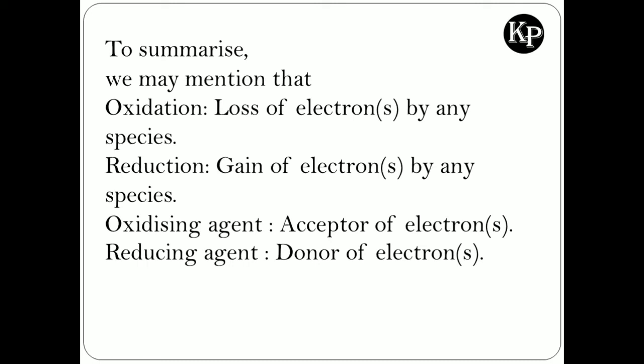And oxidizing agent means acceptor of electrons - the one who takes electrons is called the oxidizing agent. And the one who gives electrons is called the reducing agent. Remember, oxidizing agent means acceptor of electrons - the one who takes electrons is called the oxidizing agent. And reducing agent means the one who donates electrons.